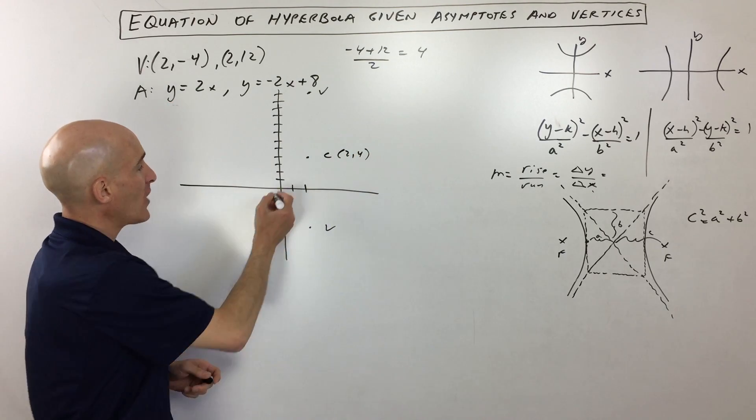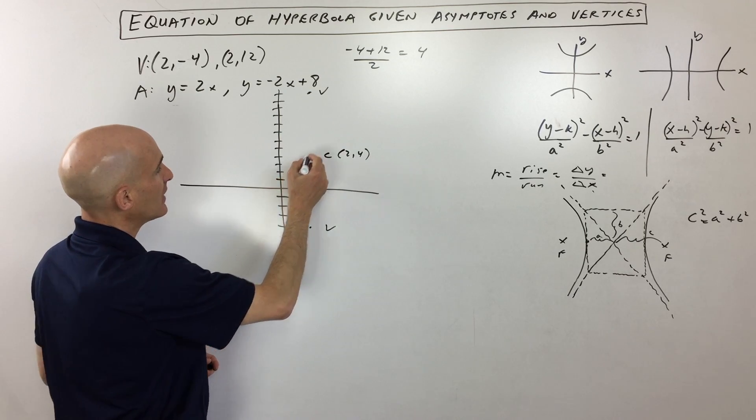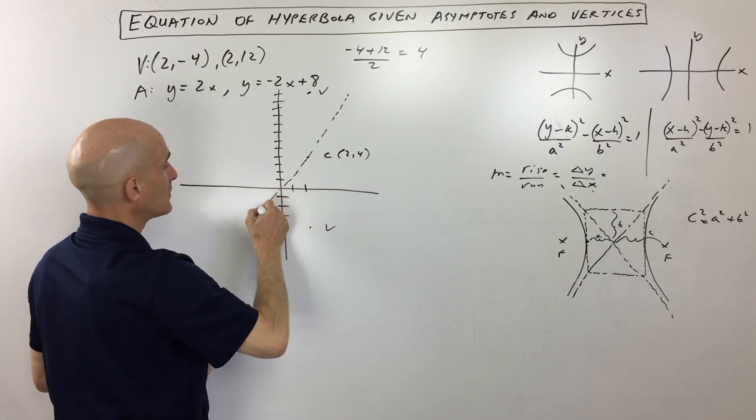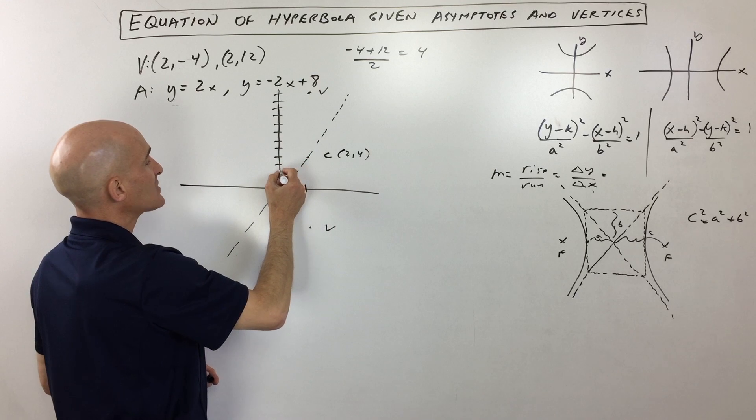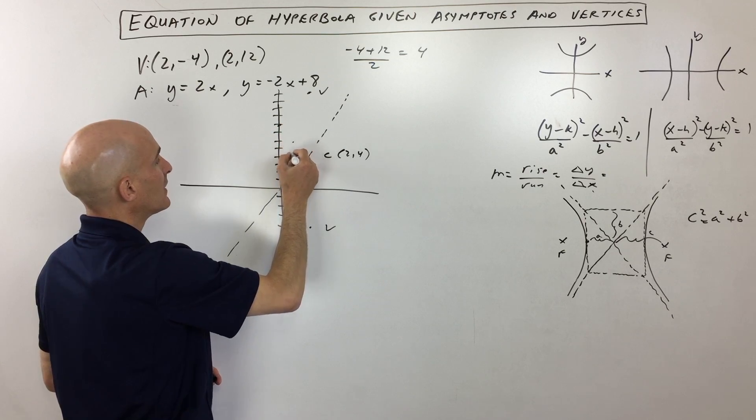Okay, then from the asymptote perspective we've got y equals 2x, so that means it's going up two over one like this. So you can see it's looking something like this. And then for the next one, y equals -2x plus 8, so two three four five six seven eight, and this one has a slope of negative 2, like so.